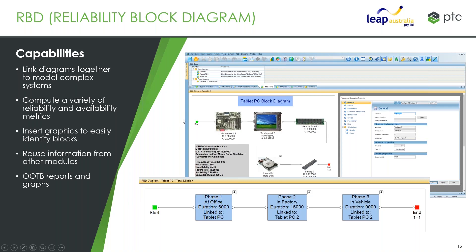We can also reuse information. As mentioned previously, prediction, FMEA, and many other modules within the risk and reliability suite can feed into your RBD. So you're leveraging existing information, speeding up turnaround, and not having to constantly duplicate information in multiple locations.